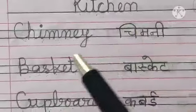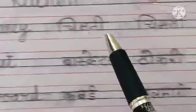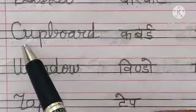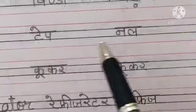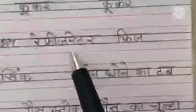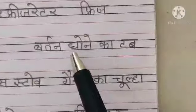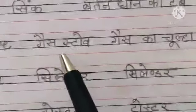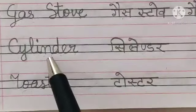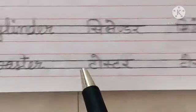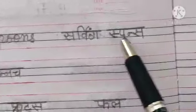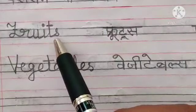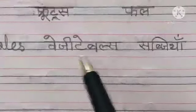Lesson 5 - Kitchen: Chimney, Basket means टोकरी, Cupboard, Tap means नल, Cooker, Refrigerator means Fridge, Sink, Toaster, Serving Spoons means परोसने के चम्मच, Fruits means फल, Vegetables means सब्जियाँ. Lesson 6 - Bathroom: Bucket means बाल्टी, Soap means साबुन, Oil means तेल, Mug, Towel means तौलिया, Shower means फुहारा, Mirror means दर्पण, Shampoo, Wash Basin means हाथ धोने का स्थान, Commode means शौच के लिए बैठने का स्थान, Bathing Tub means स्नान करने का टब, Tap means नल.